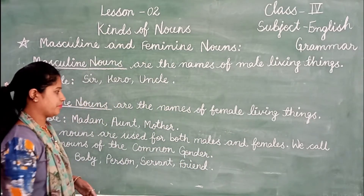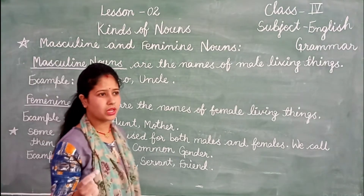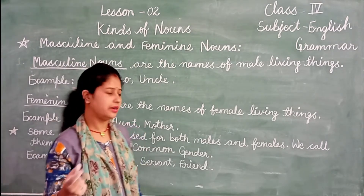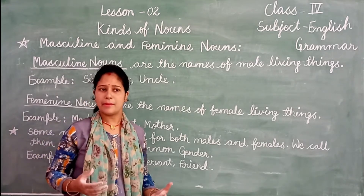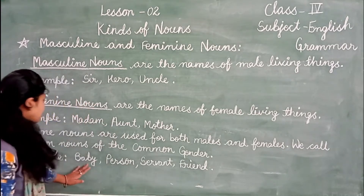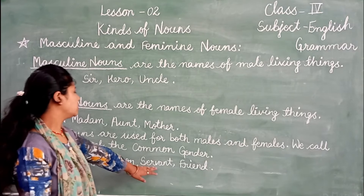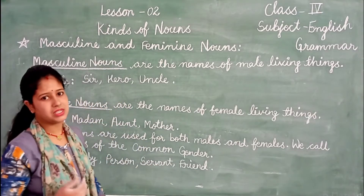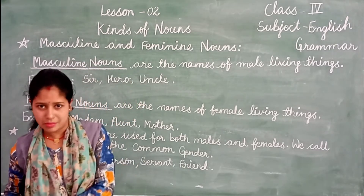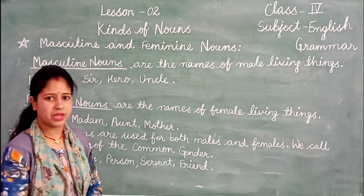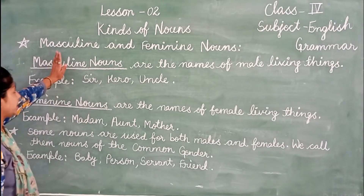We also have nouns of common gender — we call them common gender. For example, 'baby' — if we speak of a little child, we don't know if it is male or female, so we use a common gender word. Similarly, 'friend' — our friend can be a boy or a girl. This is a common gender word.